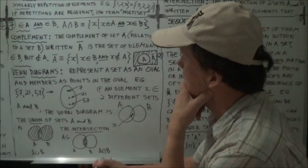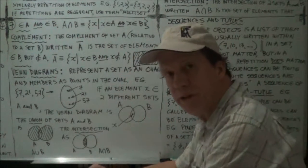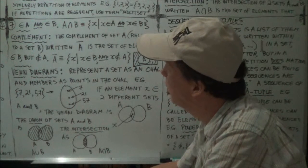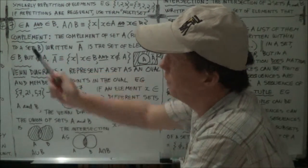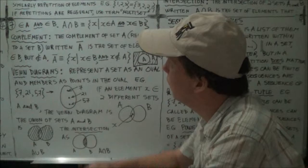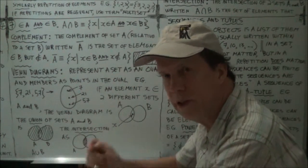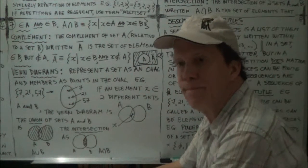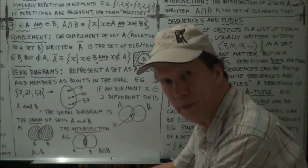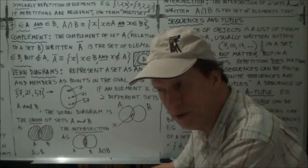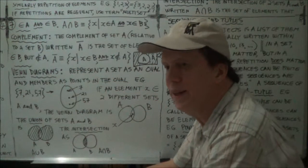All right, so in this session just continuing on with some more definitions in the context of set theory. So the idea of the complement. Now note the E, it's not an I. If you're not a native English speaker, the word complement probably sounds to you like somebody said something nice about you. But that's with an I. Compliment. This is complement. What does that mean?